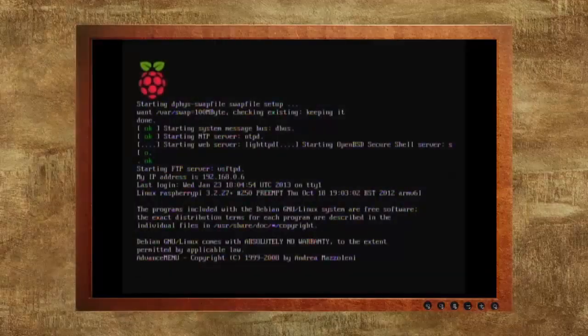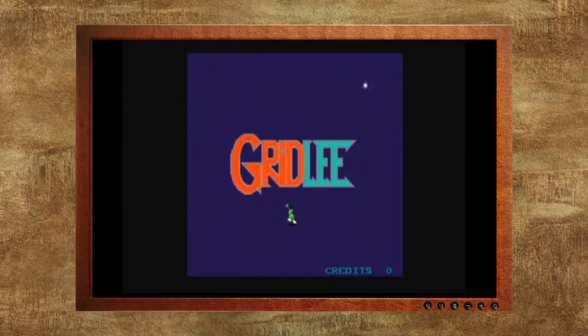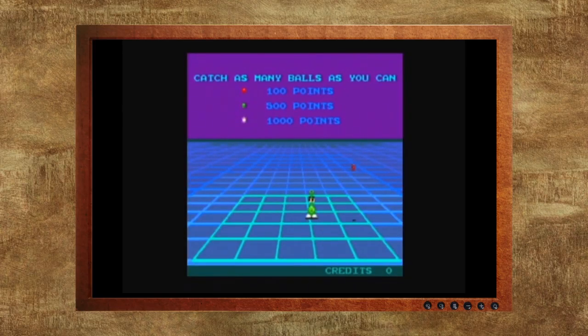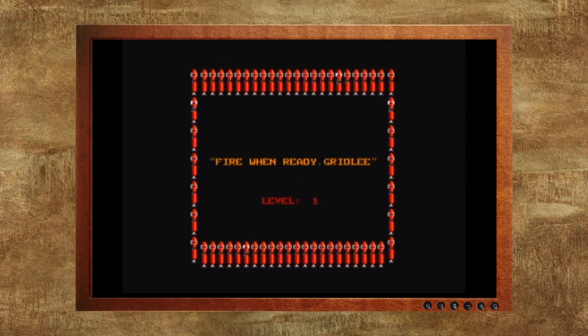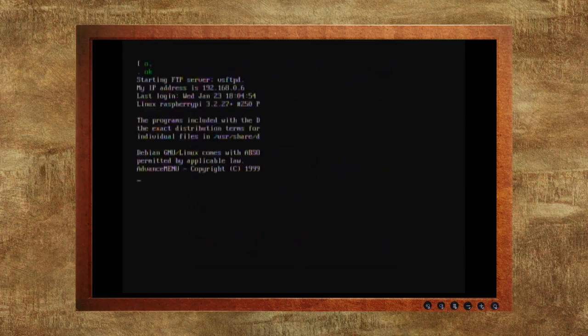It should boot straight to the menu with the test game already in it, so you can see if everything works. If you're happy with it as is, then you're done. But if you want to tweak it more and add some games, we need to get to the command line. To do this, first exit out of your game by hitting escape on the keyboard, and then hit escape again to exit out of the menu.